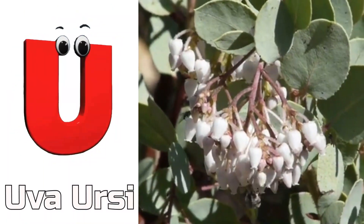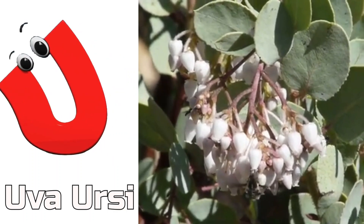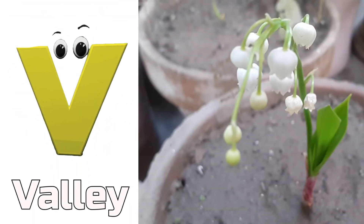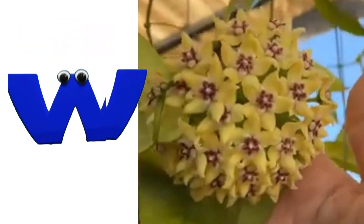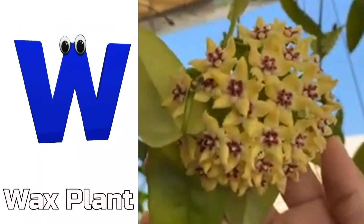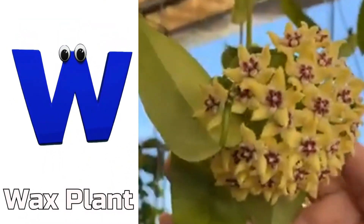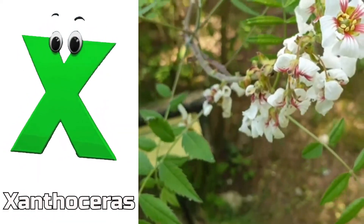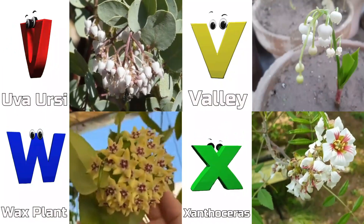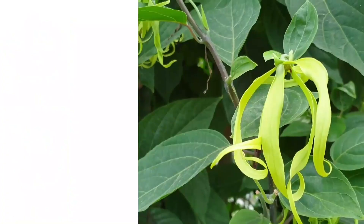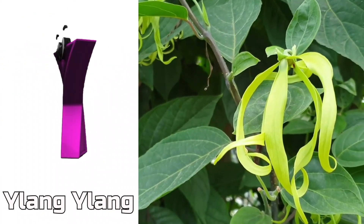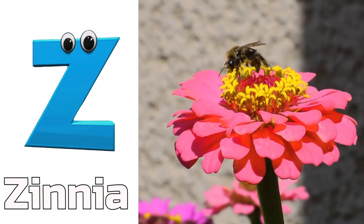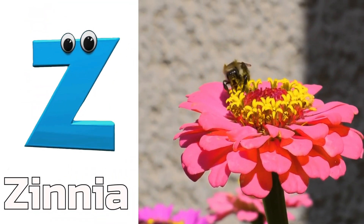U is for Uva Ursi. V is for Valley. W is for Waxplant. X is for Xanthosaurus. Y is for E-Long. Z is for Zinnia.